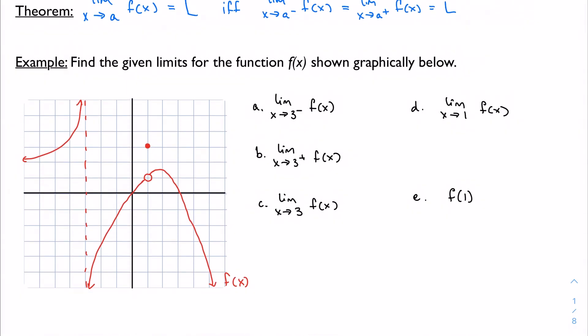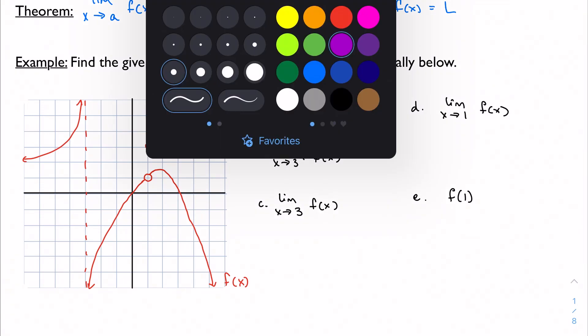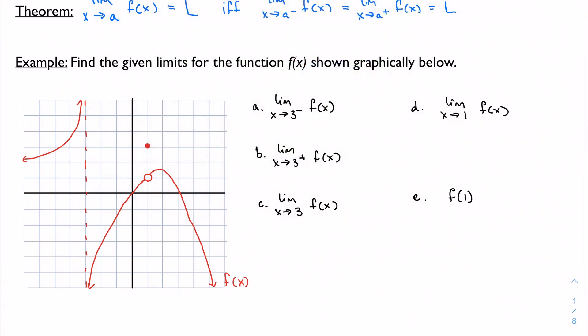Let's put this into context because it's going to make more sense this way. Find the given limits for the function shown graphically below. We want to start with the limit of the function as x approaches 3 from the left. So let's find 3. Here's 3.